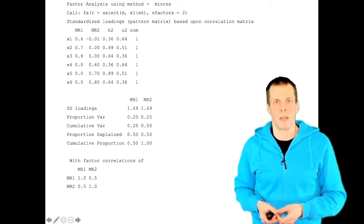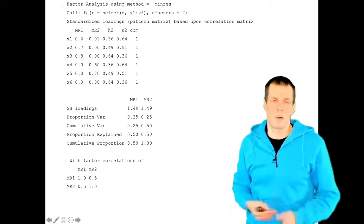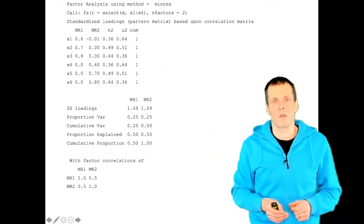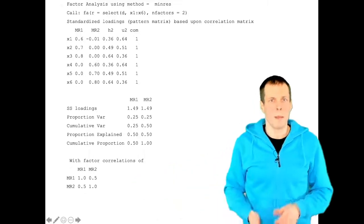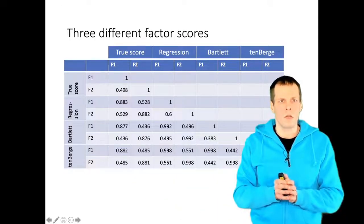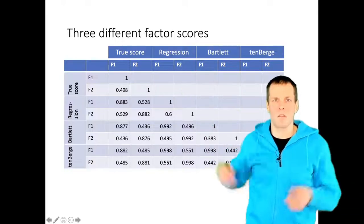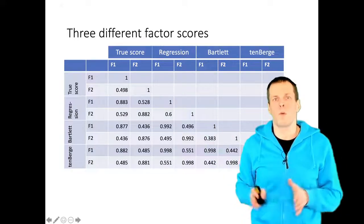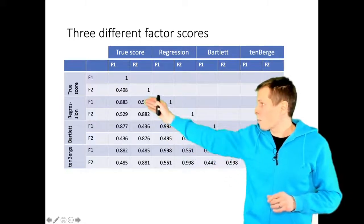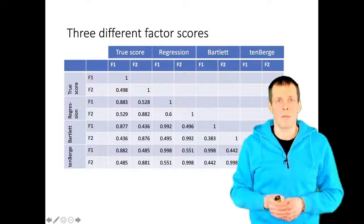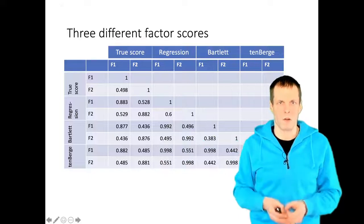The factor analysis results are here. As expected with this large sample size, there are no cross-loadings. The first three indicators load only on the first factor, the second three load only on the second factor, and the factors are highly correlated at 0.5. Here are the correlations between the scores. The true scores are the actual values of the latent variables — in a simulated dataset we can observe them. The factors correlate at 0.498 in this large sample.